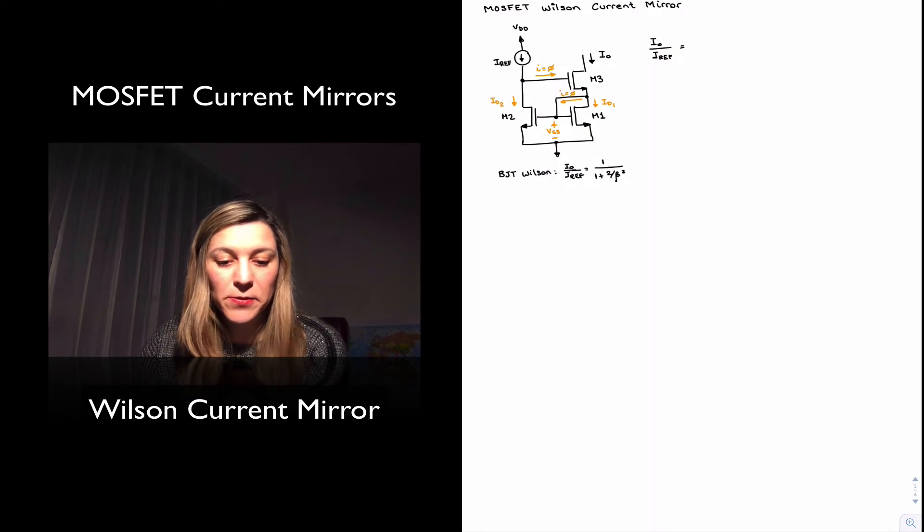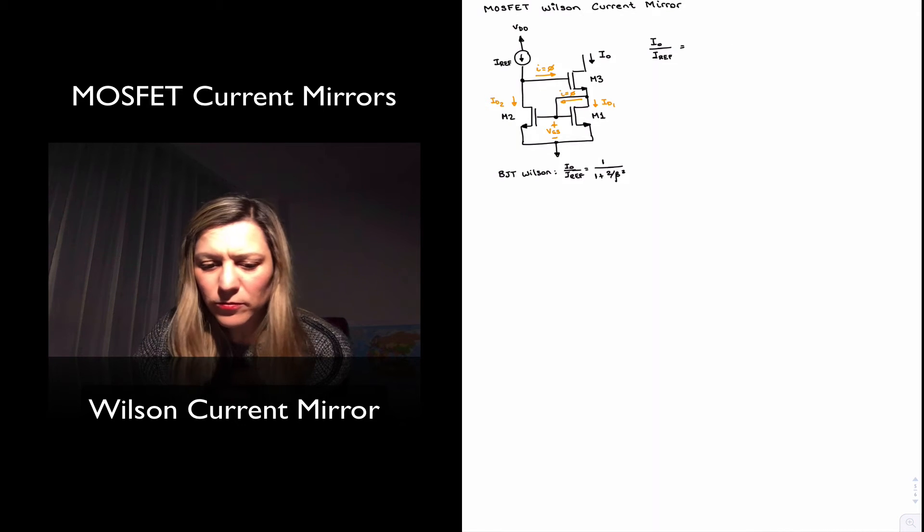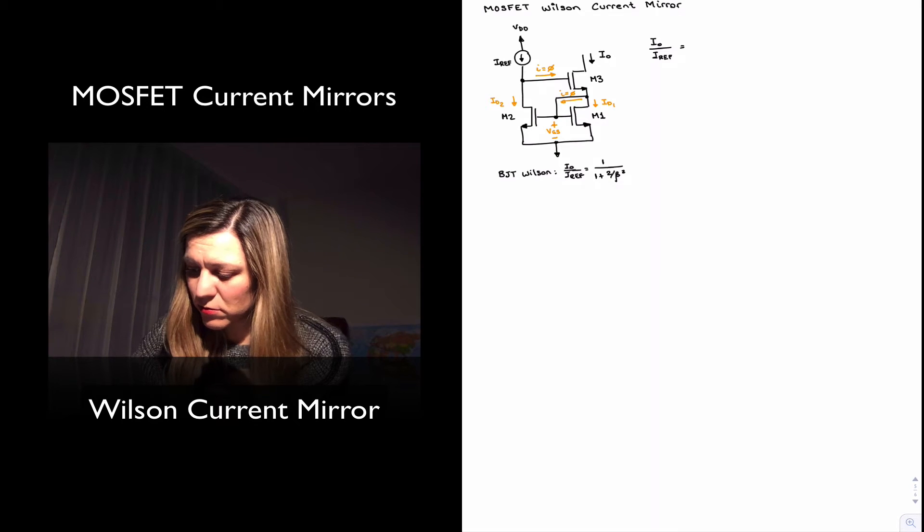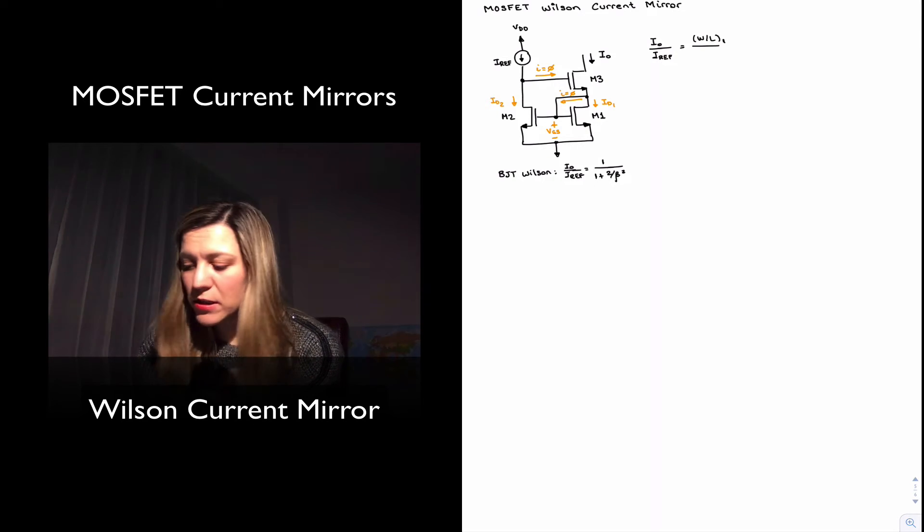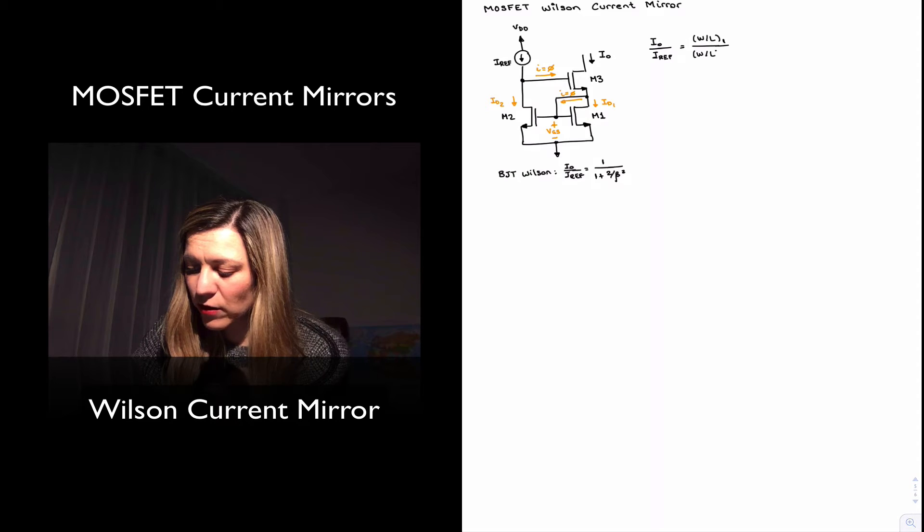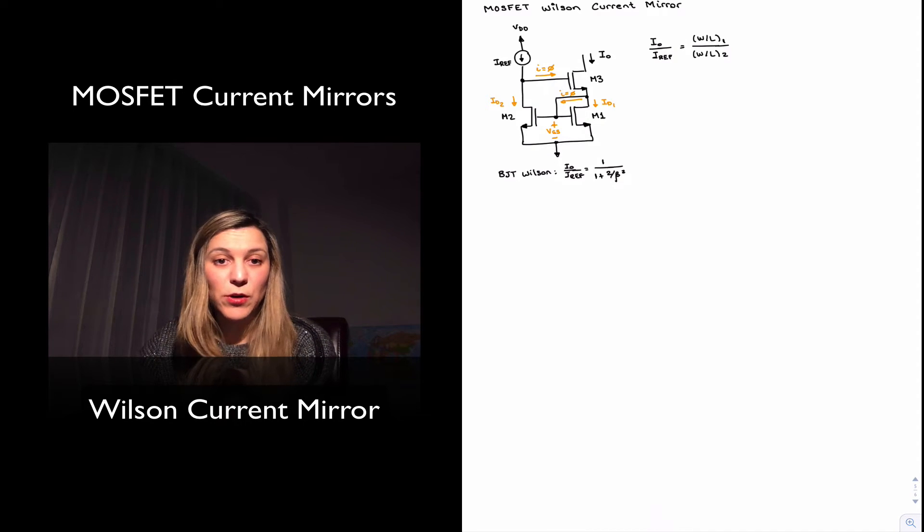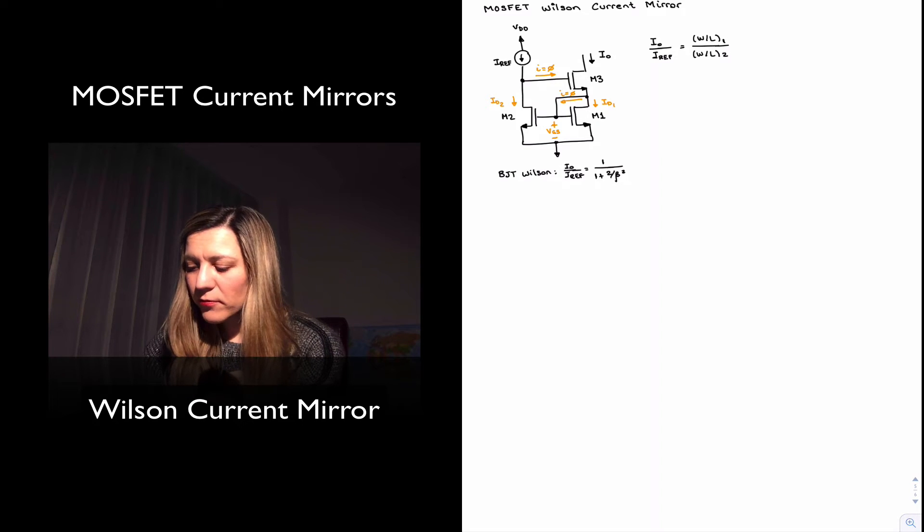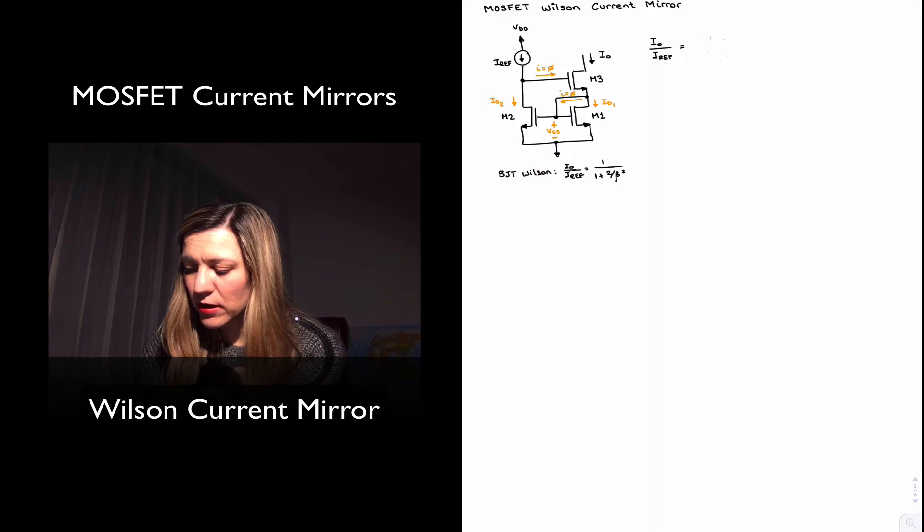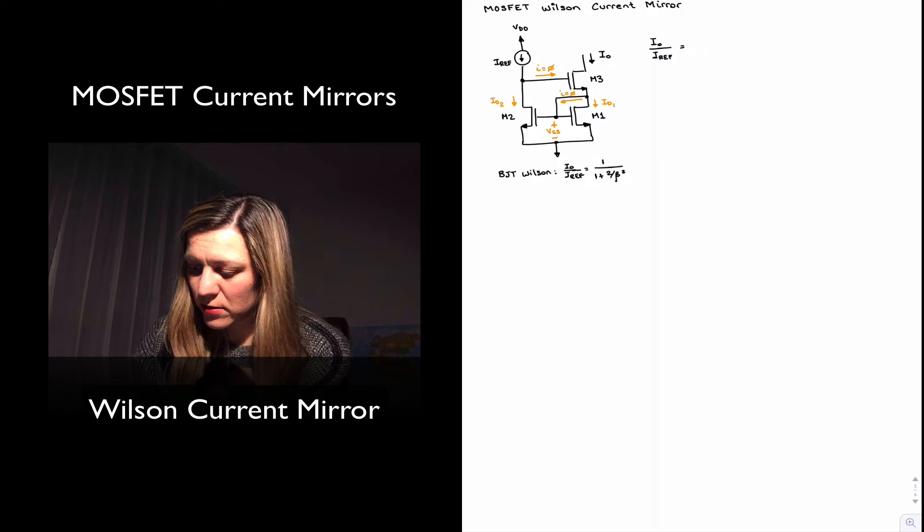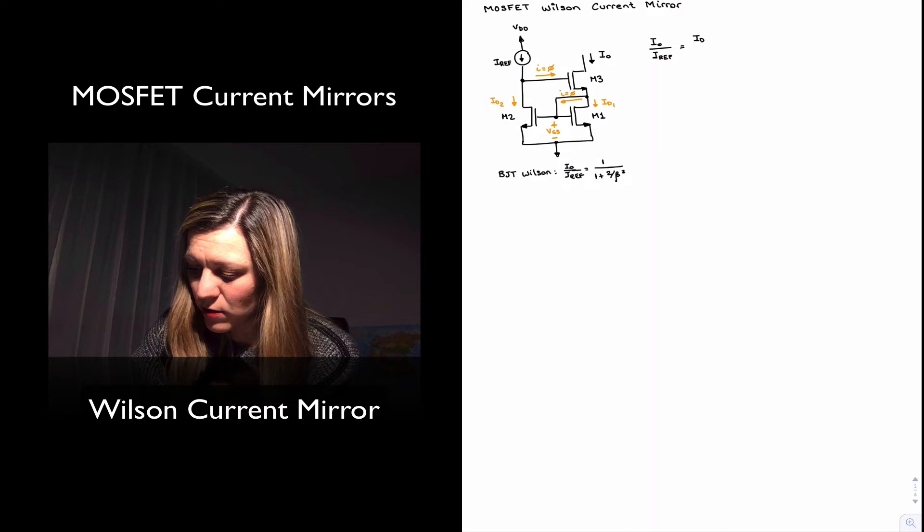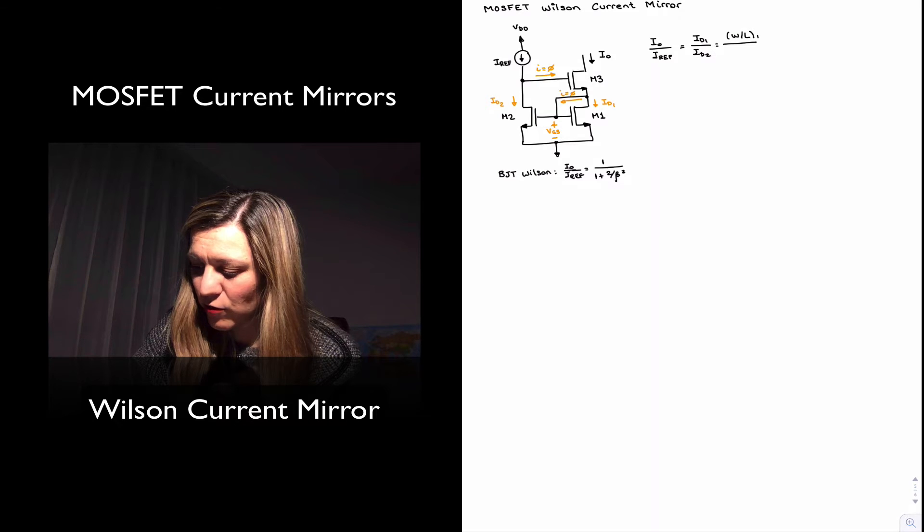And so it will be more accurate to write, instead of just assuming all the transistors are the same size, to write that IOUT over IREF is equal to the aspect ratio of M1, which is the transistor directly connected to the output transistor, so width over length 1 divided by width over length 2, which is the transistor where IREF or ID2 is flowing. Perhaps I should write this so that it is more clear as follows. IOUT is equal to ID1. IREF is equal to ID2. And perhaps then it makes more sense to say this is width over length 1 and width over length 2.